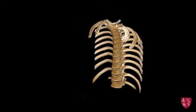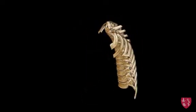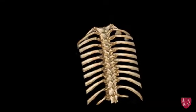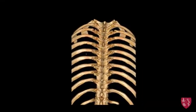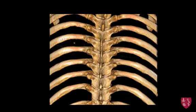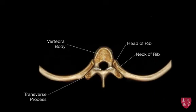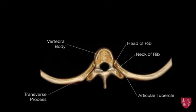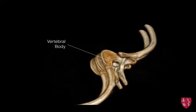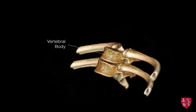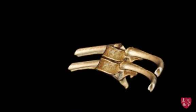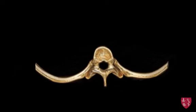The ribs attach to the thoracic vertebra via the transverse processes as well as the vertebral body. Uniquely, on the thoracic vertebra, we can see the overlap of the head and neck of the rib up to the articular tubercle. We can see that each of the ribs articulates with more than one thoracic level, making this a strong site of overlap and attachment of the ribs, and thus making it difficult for dislocation of these structures.